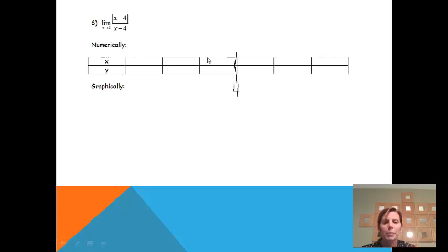And then getting really close to four from the left side, I could put 3.999. A little further away would be 3.99. And then a little bit further away would be 3.9. Going the other way, really close to four, would be 4.001. And then a little further away would be 4.01. And then a little further than that would be 4.1. So now we have our table set up. So now we can go back to the calculator.